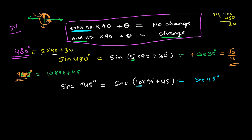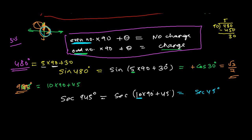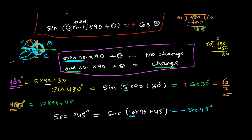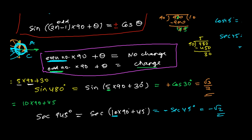At one circle we cover 4×90s: so 4, 8, 12 — each circle is four 90s. After 8×90s we're back at zero; at 9×90 here; 10×90 here; so 10×90 + 45° puts us in the third quadrant. In the third quadrant, by CAST rule, only tan and cot are positive — all others are negative. So sec(945°) = −sec(45°). Since cos(45°) = 1/√2, sec(45°) = √2, giving the answer −√2.